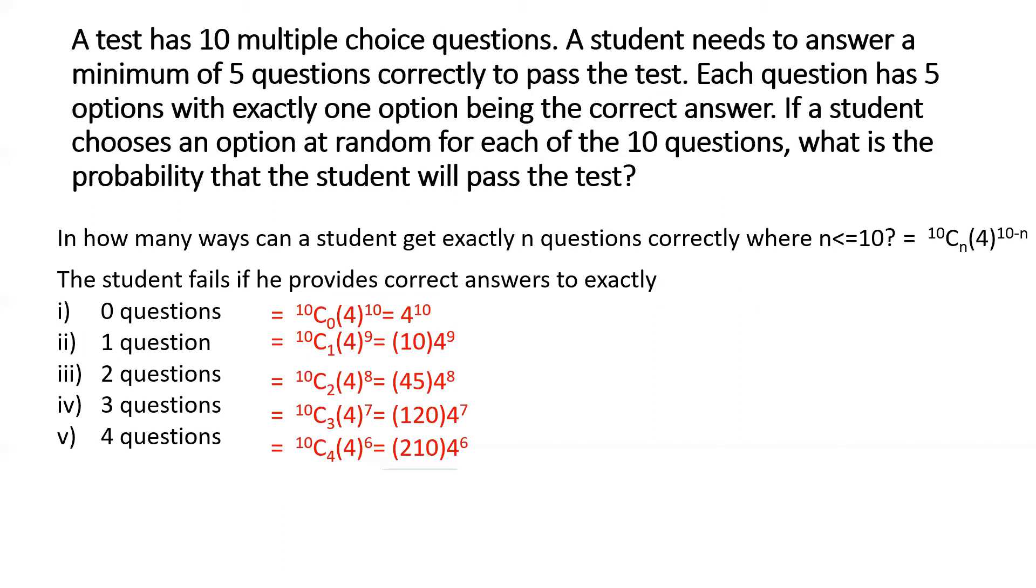And then if we add up all of these scenarios, it's a little bit of calculation here to sum up all of these scenarios to see the total number of ways in which the student can provide answers that's not enough for him to pass the test. And that will be 23,064 into 4 to the power 6.